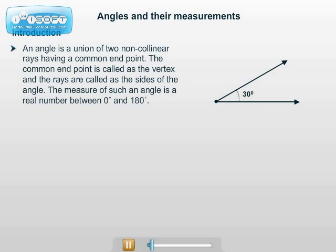The common endpoint is called the vertex and the rays are called the sides of the angle. The measure of such an angle is a real number between 0 and 180 degrees.